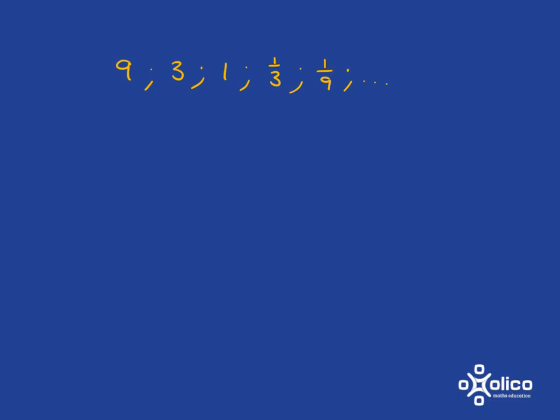One way to think about how we've gone from one term to the next is to think about it as we've divided by 3. So we could think each time we've divided by 3. But another way of writing divide by 3 is to simply talk about it as multiplying by 1 over 3.